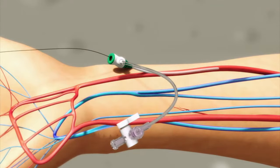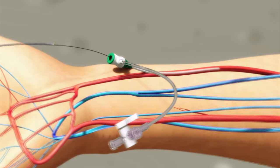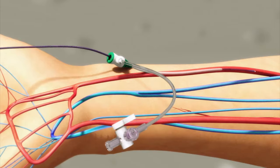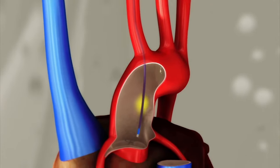Next, your doctor inserts a small guide wire and a long, thin, flexible hollow tube called a catheter through the sheath to access your coronary artery.